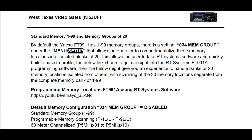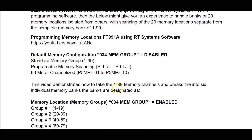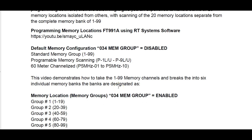So real quick, this is kind of a retread of a memory — discussing memory locations and memory modes. The FT991A actually has two memory operation modes. One of them is referred to as standard memory. This is the default configuration, covering memory locations one to ninety-nine. The second one is programmable memory scanning, and then the last one is the 60 meter channels. When you first get the radio, you'll be able to program up to one to ninety-nine memories, and access the programmable memory scanning and 60 meter channelized.